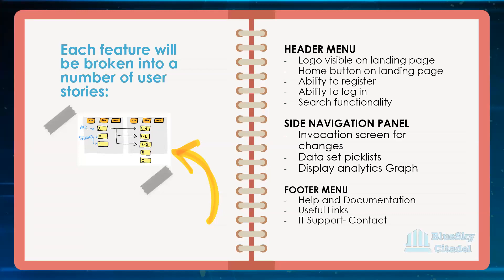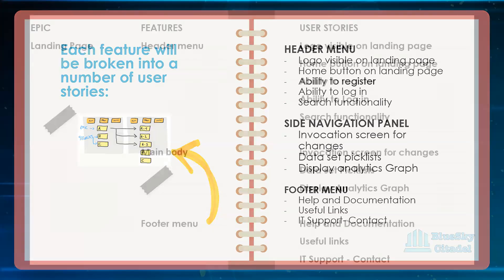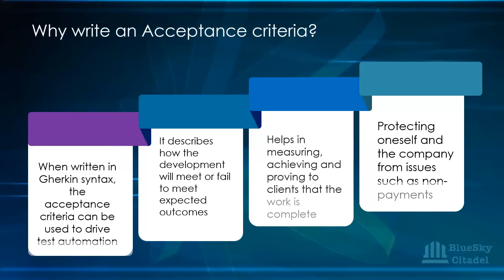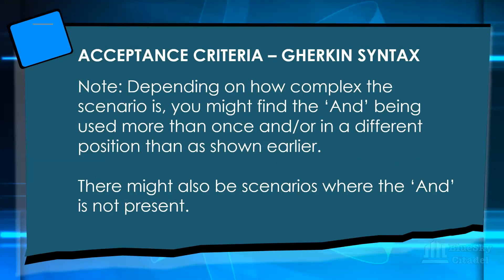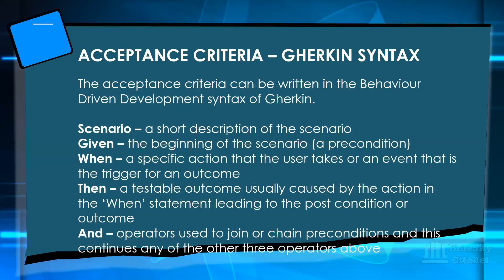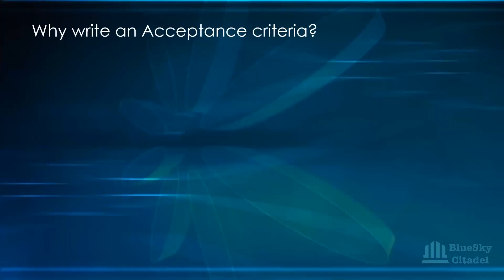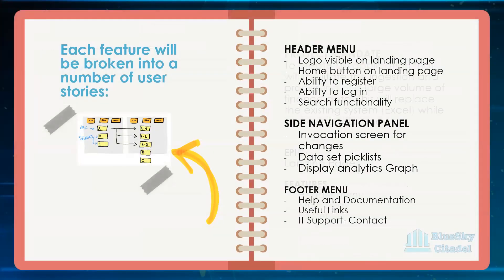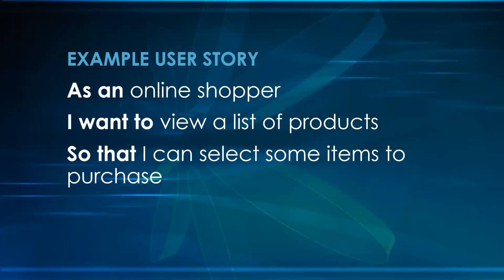Second question: has there been any situation where Gherkin syntax is used to write a user story rather than acceptance criteria? In my knowledge and experience, the Gherkin syntax is used for the acceptance criteria. The user story follows a different format — 'as a, I want to, so that.' In my experience, I haven't seen the Gherkin syntax being used in writing a user story on its own.